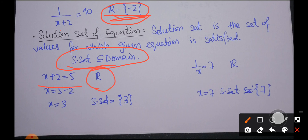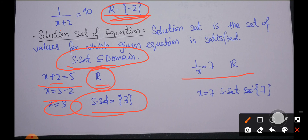For example, in 'x plus 2 equals 5,' the domain is the set of all real numbers. Solving gives x equals 3, and since 3 is part of the domain, the solution set is the singleton set {3}. Similarly, for '1 over x equals 7,' the domain is all real numbers except 0. Solving gives x equals 1/7, which is part of the domain, so the solution set is the singleton set {1/7}.